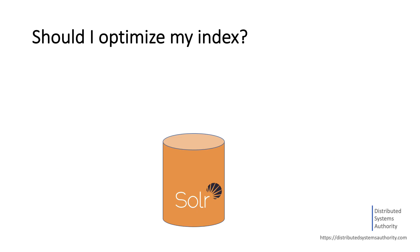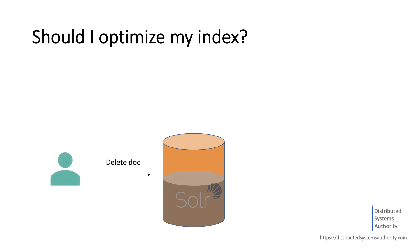Marking documents as deleted leads to some percentage of waste. Your index may consist of say 20% deleted documents, or even close to 50% based on how many update or delete requests are made. Having half or more of your index wasted isn't ideal. Note that when we talk about deleted documents, we talk about both explicit deletes and updates to existing documents — updating documents is implemented as a delete of the original document followed by an add.